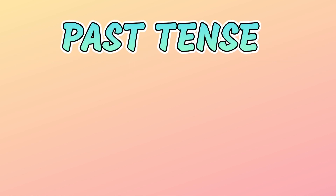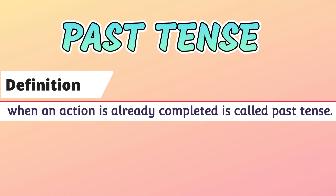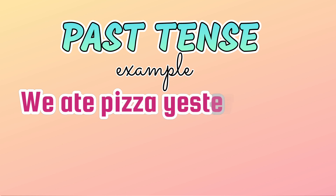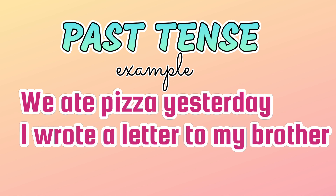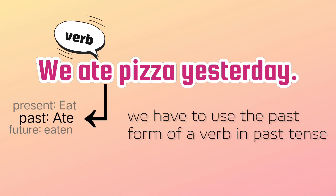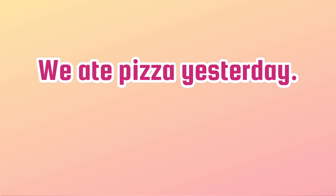Now go to the next tense, which is past tense. When a sentence refers to an action that has already been done, or simply an action which is already completed, it is called past tense. For example: 'We ate pizza yesterday' and 'I wrote a letter to my brother.' These sentences show completed actions. Note that we have to use the past form of a verb in past tense.